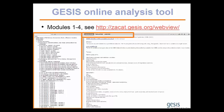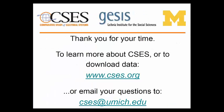A handy tool for preliminary analysis is provided by GESIS: the CSES is available in the online analysis tool ZACAT. If you register for free, you can look at variable descriptions, tabulations, and also run correlations or regression analyses and directly export the results from the website.